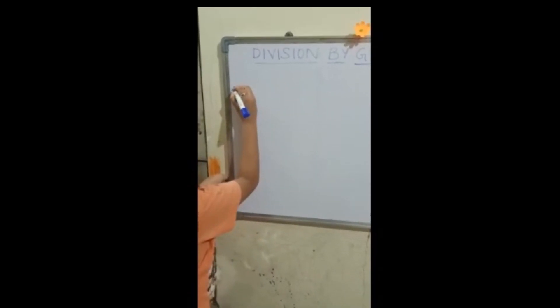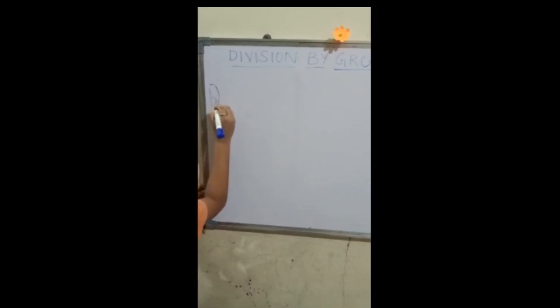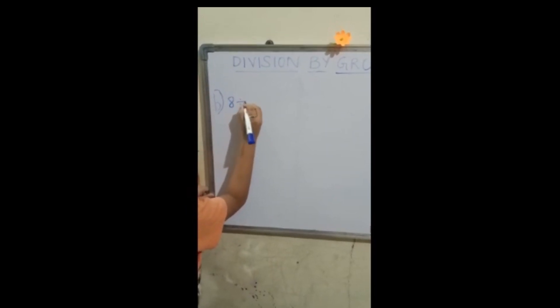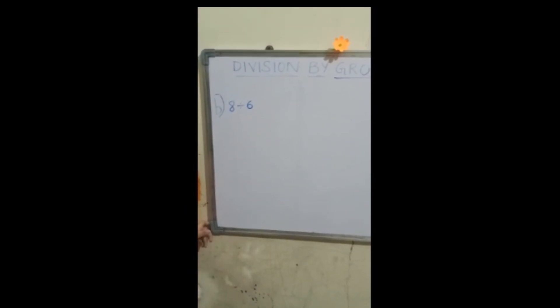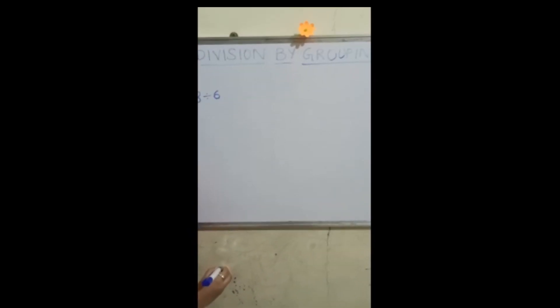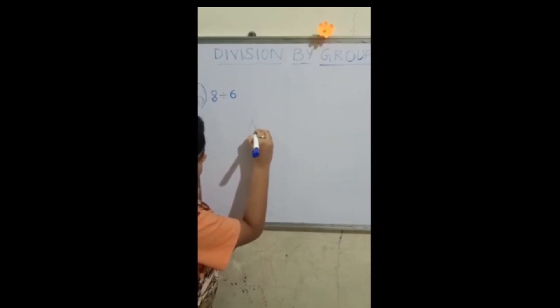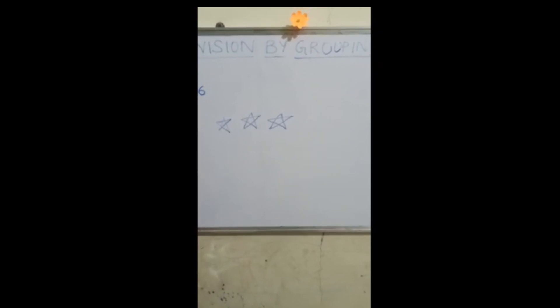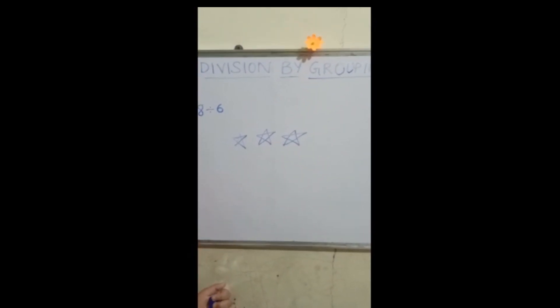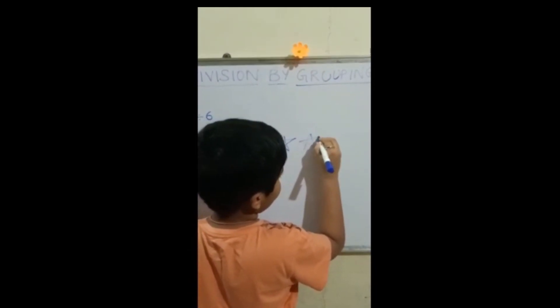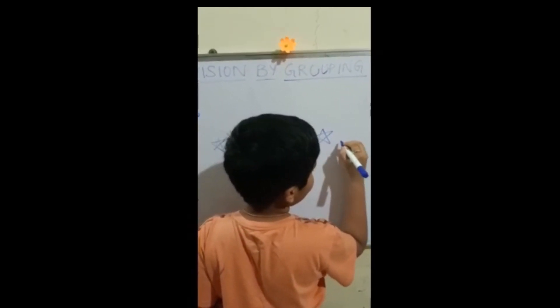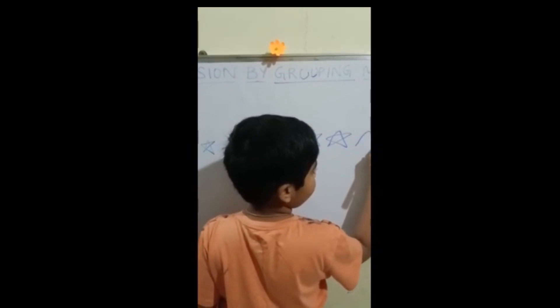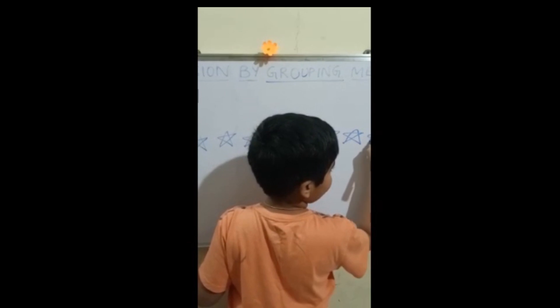Now let us see another example. Eight divided by six. Now let us draw the stars. I have drawn eight stars. Let us group by six.